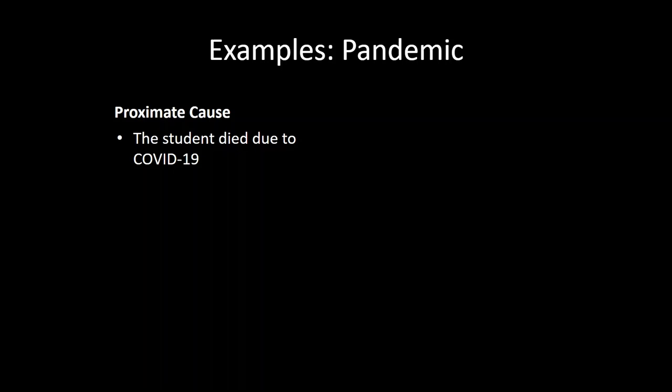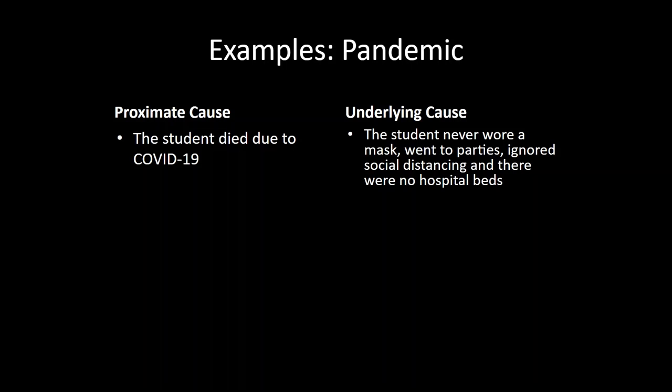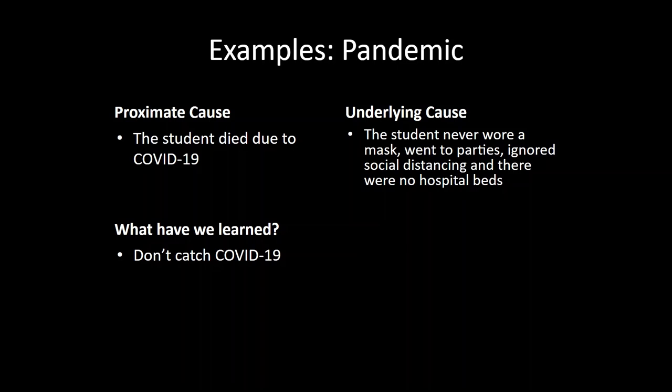Let's turn to another example — a global pandemic. The proximate cause of the student's death is COVID-19. The underlying cause is that the student never wore a mask, went to parties all the time, completely ignored social distancing guidelines, and to top it all off, there were no hospital beds when that student got sick. Again, both of these are causal relationships. But if we look at the proximate cause, the lesson is simply that we should not catch COVID-19 — fair enough, but not particularly helpful.